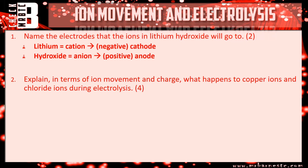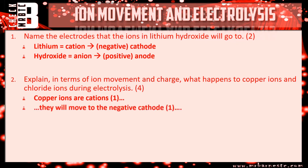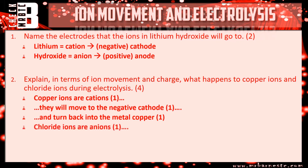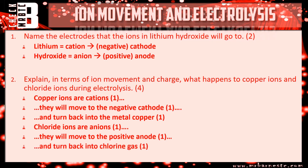Question two: copper — it's a metal, therefore it's a cation (one mark). It will move to the negative cathode (one mark) and turn back into solid metal copper (one mark). For the non-metal, chloride ions are anions, they go to the positive anode (one mark) and turn back into a gas — you should know that chlorine is a gas (one mark). That gives you the marks available.